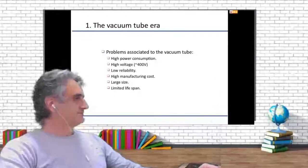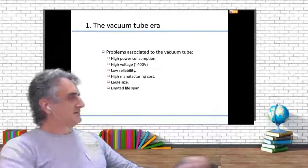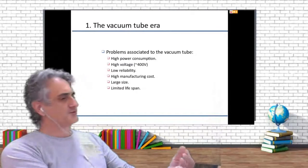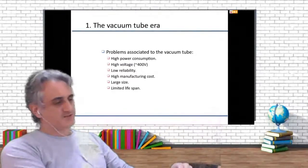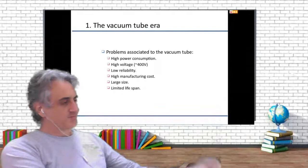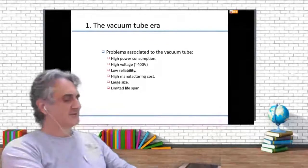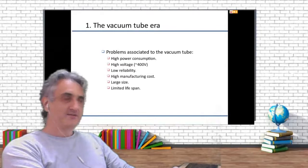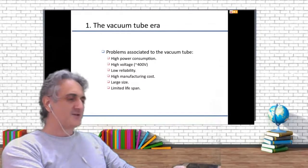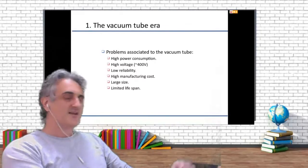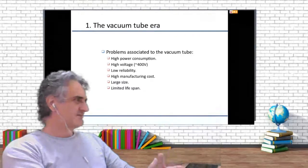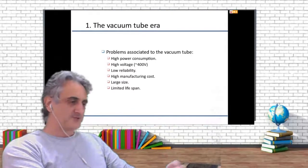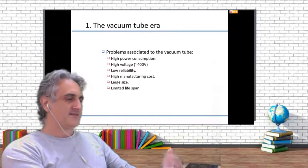The problem is that it was using vacuum tubes. What does that mean? It means a lot of power — you need to use a high voltage — low reliability, a high manufacturing cost, very large size, and probably a limited lifespan, which means that it will break very easily.